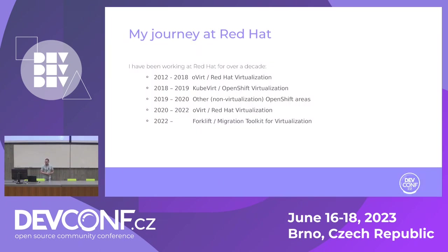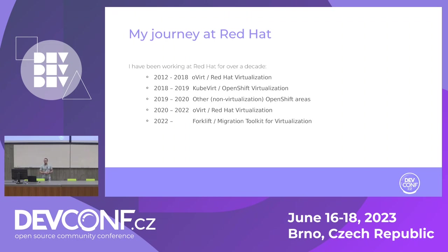A bit about myself: when I joined Red Hat I started contributing to OVIRT, the upstream project of Red Hat Virtualization. Then I contributed to QVIRT, the upstream of OpenShift Virtualization and the successor of OVIRT. I had a short break from virtualization working on other OpenShift stuff, and in 2020 I switched back to OVIRT. Now I'm working on Forklift, which is the upstream of MTV — Migration Toolkit for Virtualization.